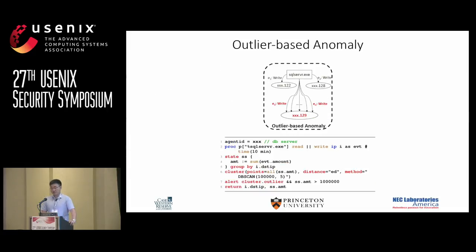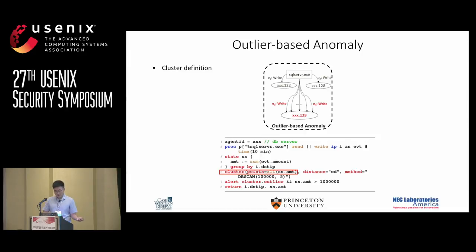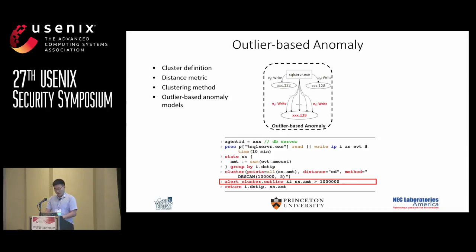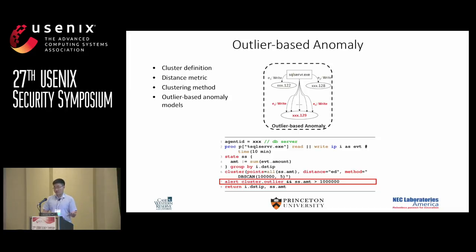Besides comparing to history states using time series models, we also support comparison to peer states using outlier-based anomaly models. We have a cluster definition where we define the points making up the cluster, the distance method, and the clustering method. We can then use the clustering results in the alert clause and specify that we only want to return outlier events. This is still the detection of abnormally large data transfer on the SQL server, but here we compare with peer values, not history values.